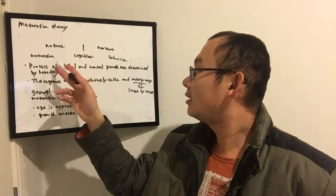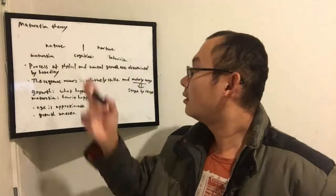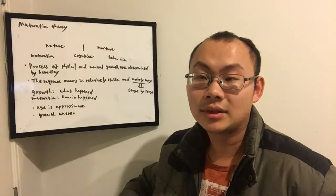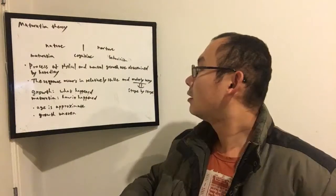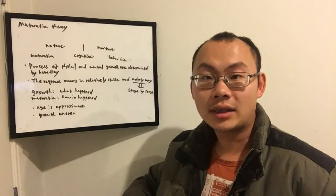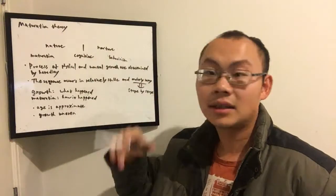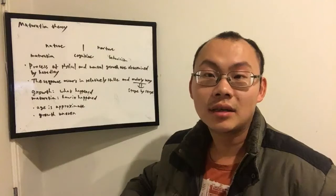Maturation theory focuses on the natural part that influences people's growth. According to cognitive theory, there is an interaction between nature and nurture that controls people's growth.